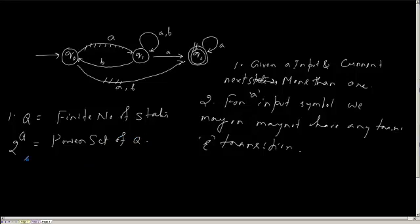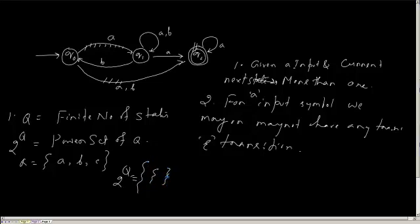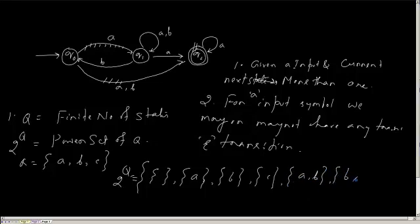What is the power set of Q? Suppose Q is {A, B, C}. Then 2 to the power Q will contain every possible combination of the states — it can have an empty set, or it will have only one element A, or combinations like A and B, B and C, and so on.